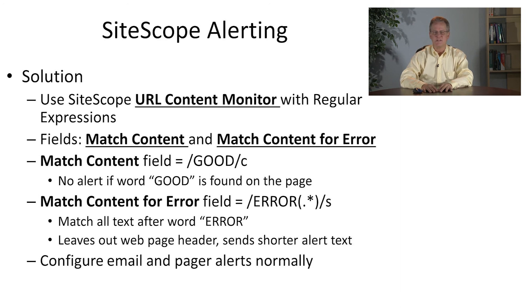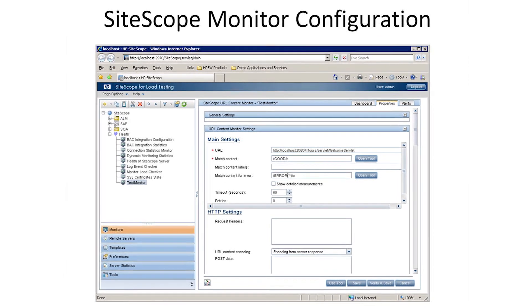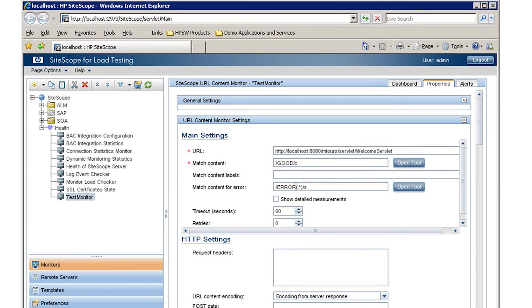The reason for this is that a pager and an email on a smartphone have a very small screen size, and the normal alert without this filter would send all of the header information from the URL, which we do not want. Here you can see the screen where you configure these two fields for the URL content monitor. There's another screen, which you don't see, which shows how to configure the alerts themselves — but that's very straightforward, just involving putting in an email address and a pager number.